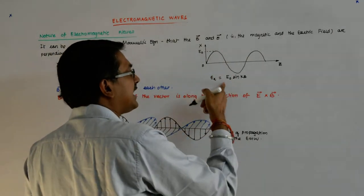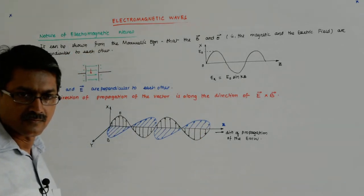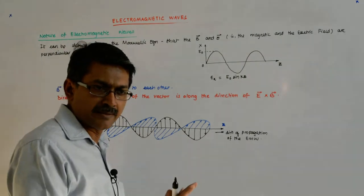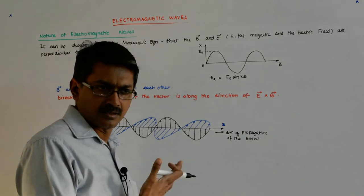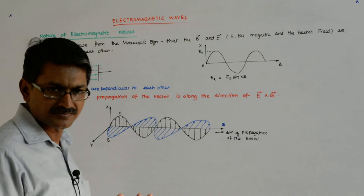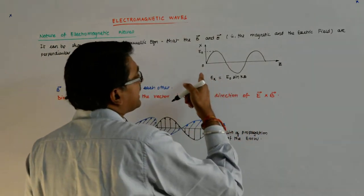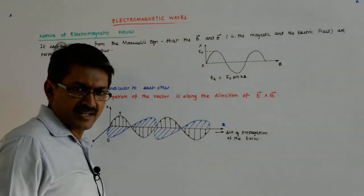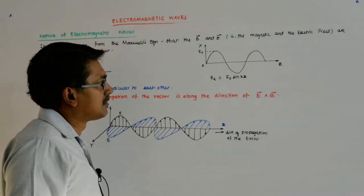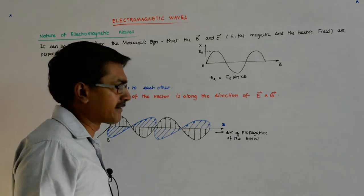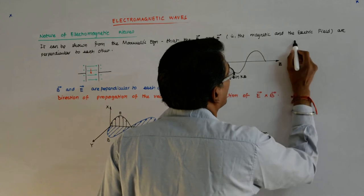E naught sine(kz) is not a traveling wave — it just stands still. There is no time factor. For the wave to be propagating, it has to be moving in this direction with time. Let us try to understand this first.